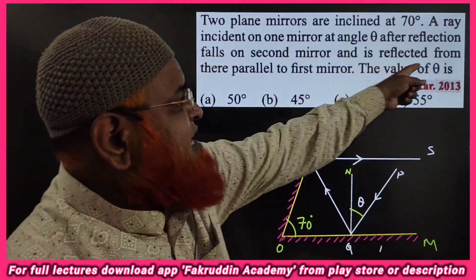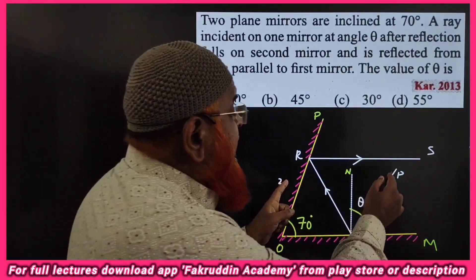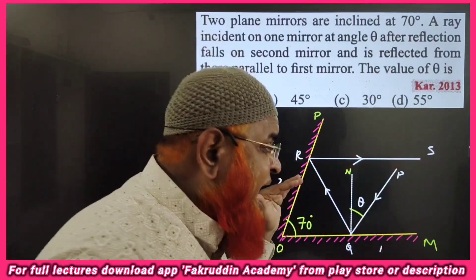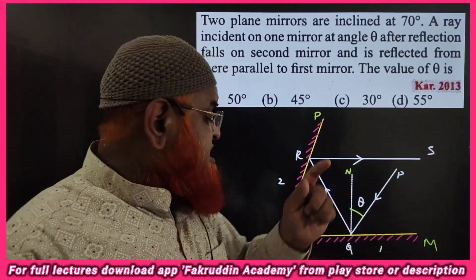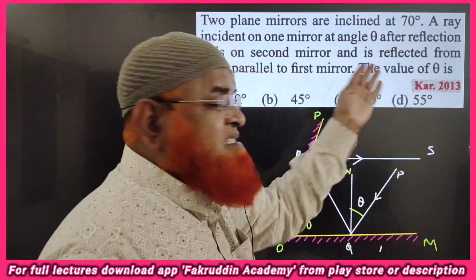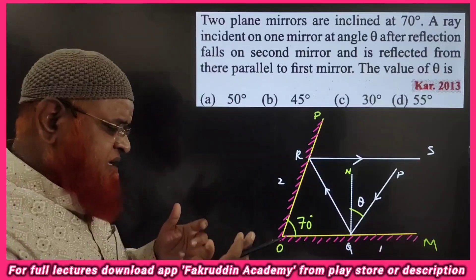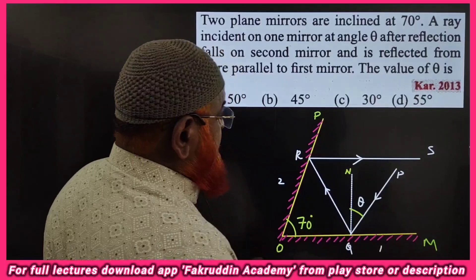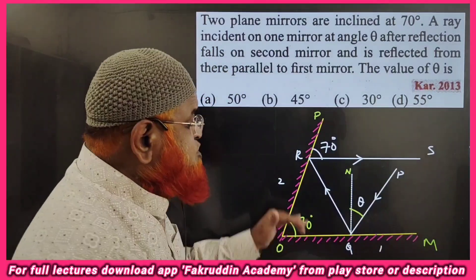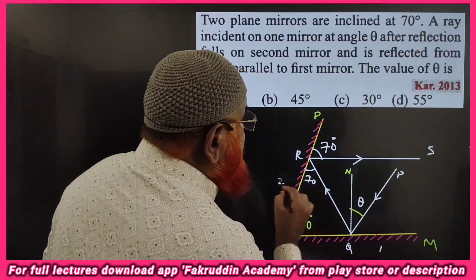The question states that the reflected ray coming out as RS is parallel to the first mirror OM. After taking two reflections, the outgoing ray RS is parallel to OM. Since these two are parallel, and this angle is 70 degrees, these are corresponding angles — so this angle is also 70 degrees.